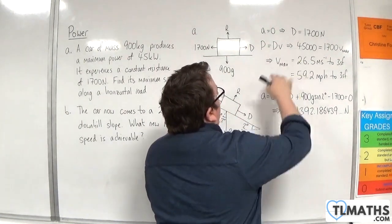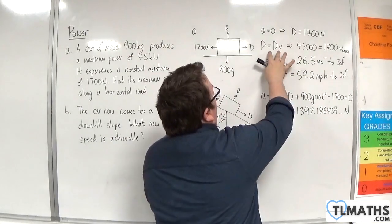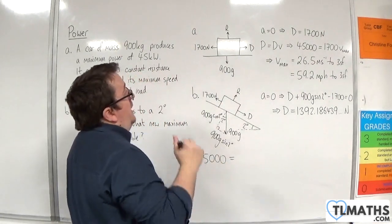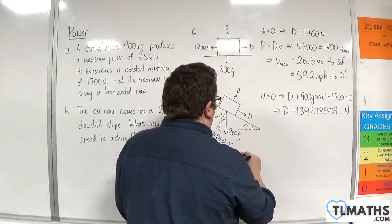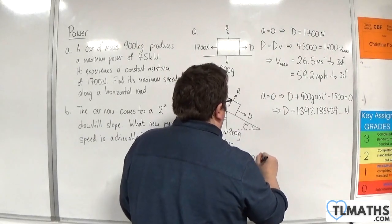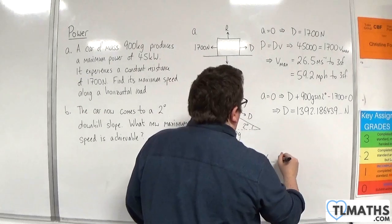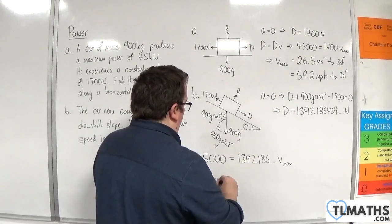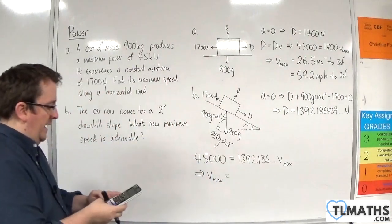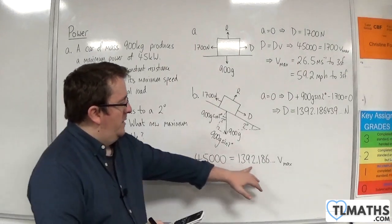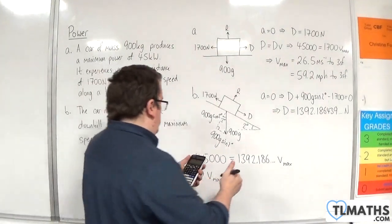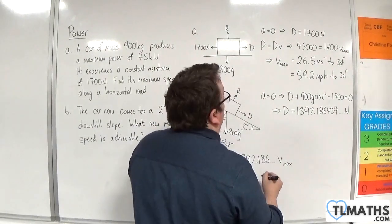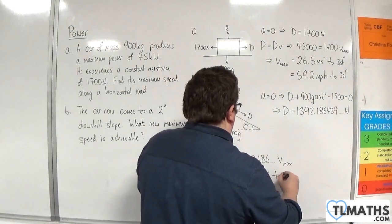So the power, again, is 45,000. I'm using this formula here. I'll write it down here. So we've got 45,000 is equal to the driving force, 1,392.186, etc., times by the maximum velocity. So the maximum velocity is 45,000 divided by this, which is 32.3 metres per second to 3 sig fig.